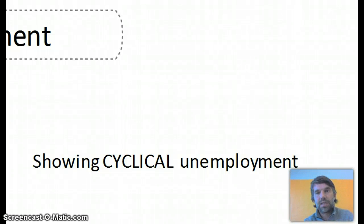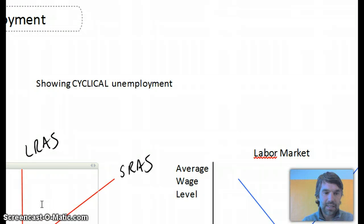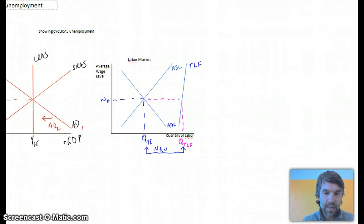Okay, so now that we understand the labor market diagram, we need to be able to show cyclical unemployment on a diagram. It's actually quite easy and it brings in a lot of things that you've already seen.